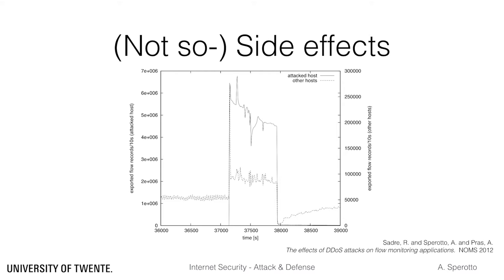The plot summarizes quite a lot of information, so let's look at it step by step. On the x-axis we have again time. On the left y-axis, we have the number of exported flow records from our measurement point for malicious traffic, shown as the full line. The number of flow records for malicious traffic is in the range of millions, roughly between 3.5 and 7 million. On the right y-axis, we have the number of exported flow records for benign traffic, the dashed line, in this case ranging between 50,000 and 300,000 flow records.